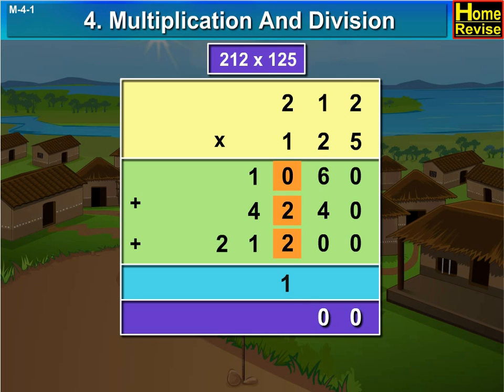0 plus 2 plus 2 plus 2, plus 1 is 5. 1 plus 4 plus 1 is 6. We write 2 as it is.